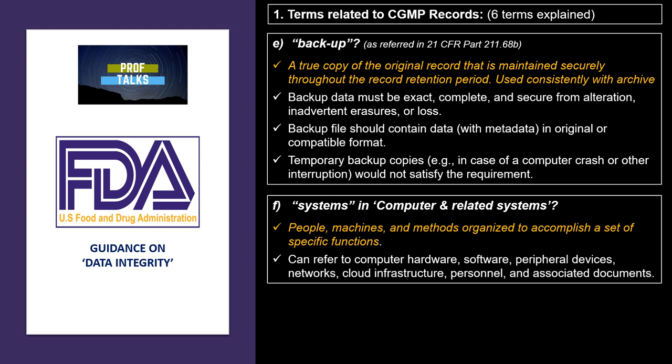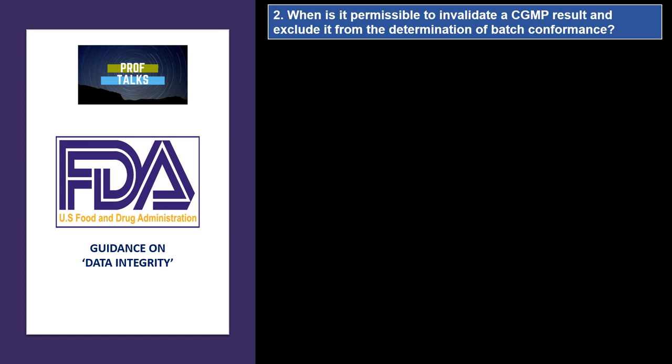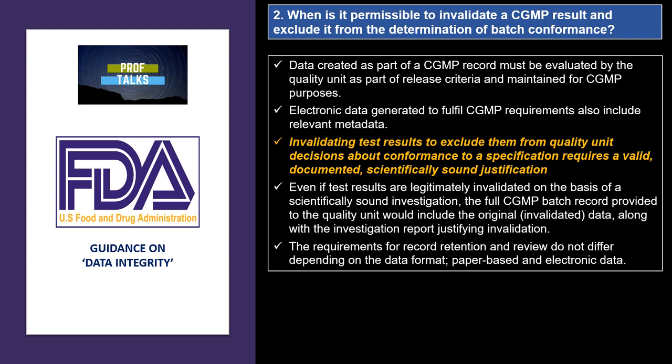The second question is: when is it permissible to invalidate a CGMP result and exclude it from the determination of batch conformance? The USFDA states that all data generated as part of CGMP is very important and must be reviewed by the quality unit. If invalidation of any data is required, a scientifically sound and valid justification should be documented. Even if test results are invalidated, all data related to the invalidation must be maintained along with the original batch records. The requirement for record retention and review does not differ depending on data format — paper-based or electronic.